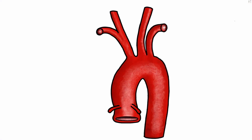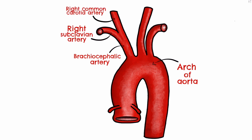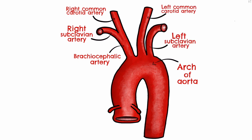Firstly it's worth reminding yourself of the origin. From the arch of the aorta we first see the right brachiocephalic trunk, which soon splits into the right subclavian and the right common carotid arteries. The next branch from the aorta is the left common carotid, shortly followed by the left subclavian artery.